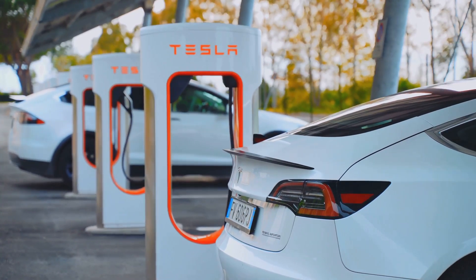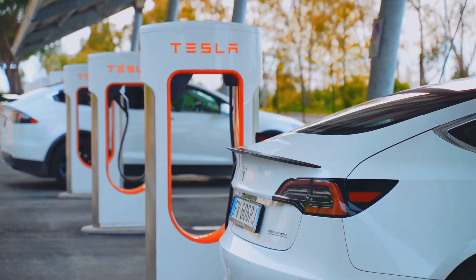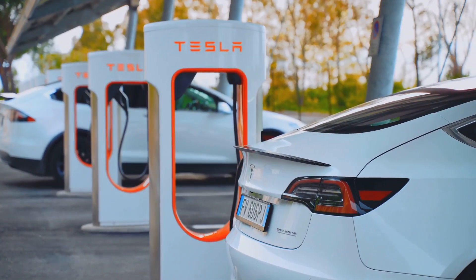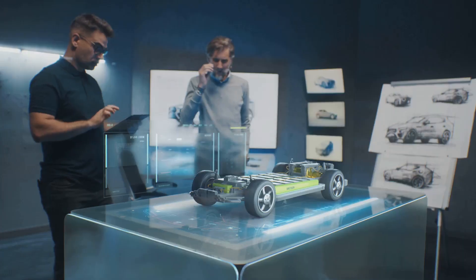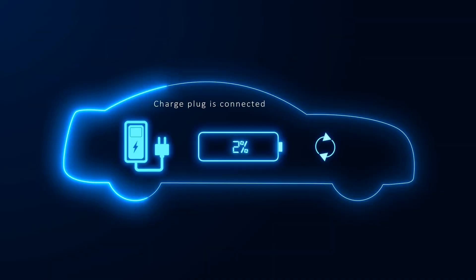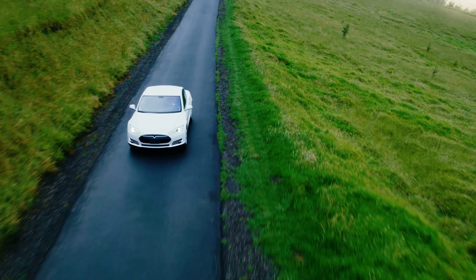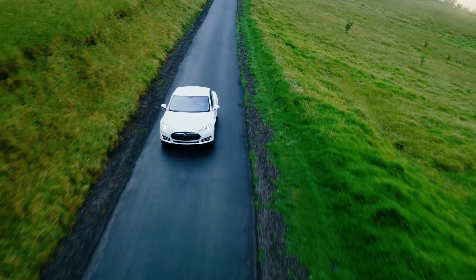For example, Tesla creates a digital twin for every vehicle it sells, gathering real-time data from a vast network of vehicle sensors to improve performance and provide regular updates.